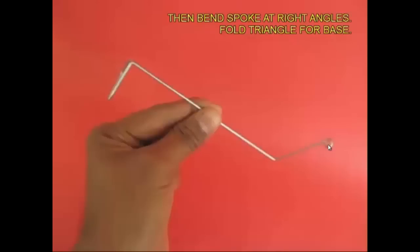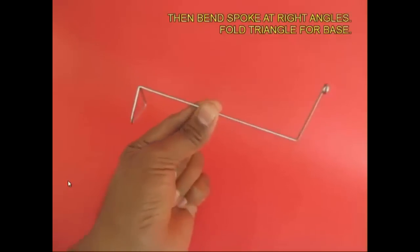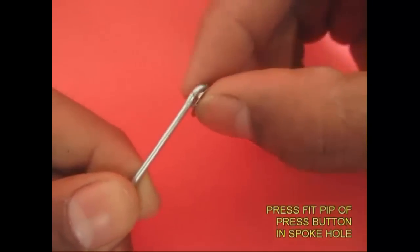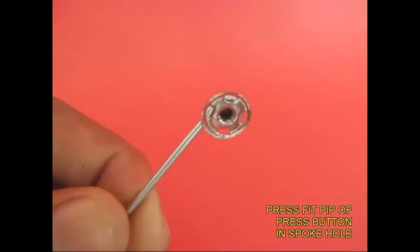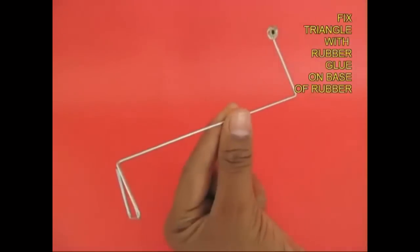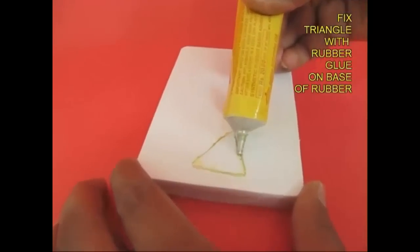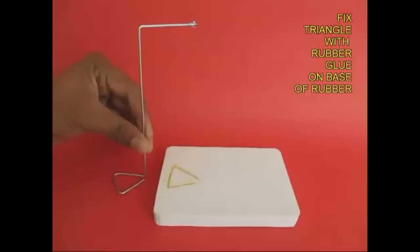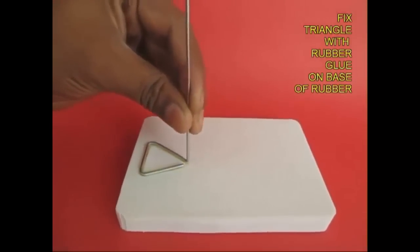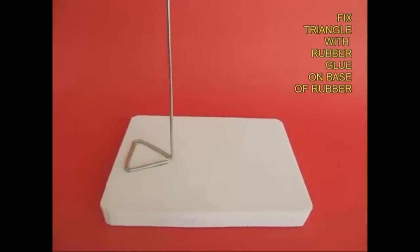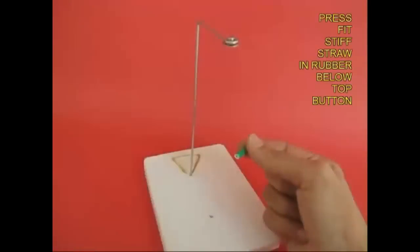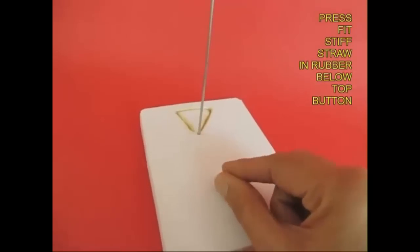Take this button, fit it on the small circle, and apply some glue. Then make an impression of the triangular base on the rubber foam and put some glue. Fit the spoke and make it stick. Immediately under where the button is sitting, right underneath that vertical, press fit the small straw rubber.